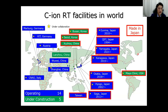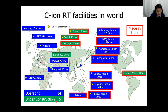This slide shows the location of carbon ion therapy facilities in the world. The blue ones are the operating facilities, and the green ones are the facilities under construction. Among 14 operating facilities, seven are located in Japan. And Mayo Clinic has started construction in the United States.